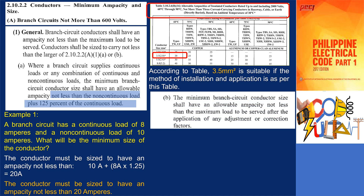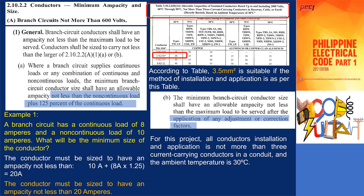Per section 3.10.2.6b.16, a conductor of 3.5 square millimeters is suitable if the method of installation and application is as per table. Subsection 2.20.2.2a1b is about applying any adjustment or correction factors. For our example project, all conductors' installation and application is not more than 3 current-carrying conductors in a conduit, and the ambient temperature is 30 degrees Celsius. Hence, adjustment factor and correction is 100%.